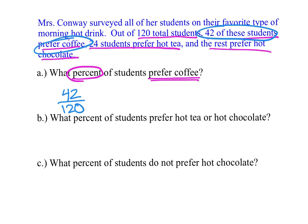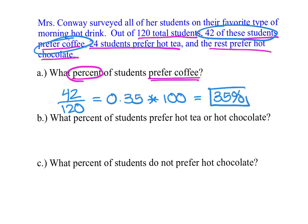The first thing I can do is turn that fraction into a decimal. We take 42 divided by 120 and find the decimal equivalent is 0.35. To turn a decimal into a percent, all I have to do is multiply by 100, so we end up with 35%. That means 35% of the 120 total students prefer coffee.